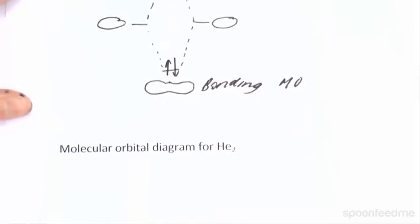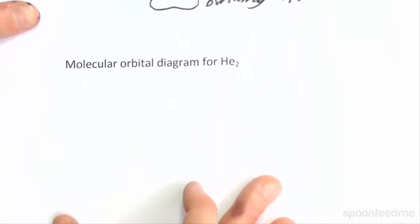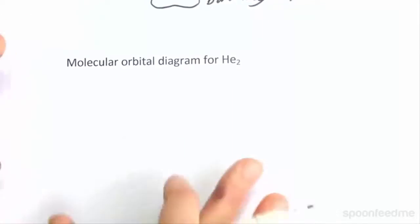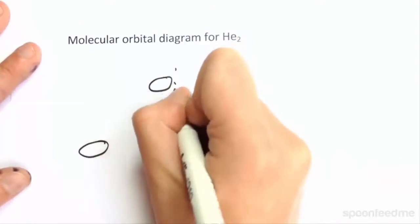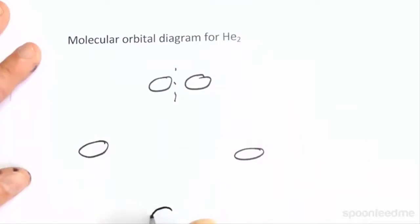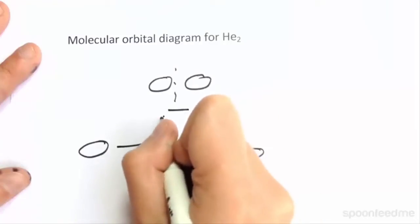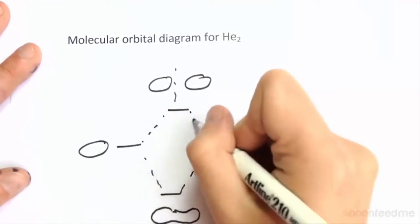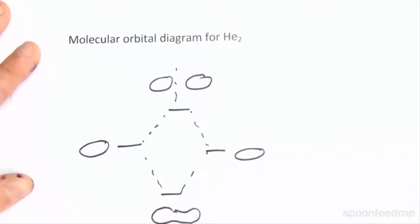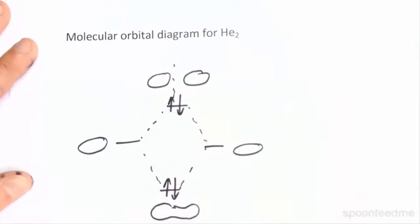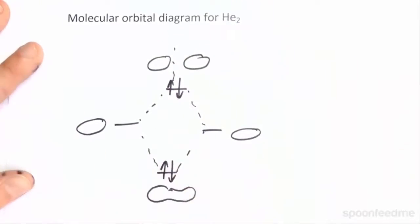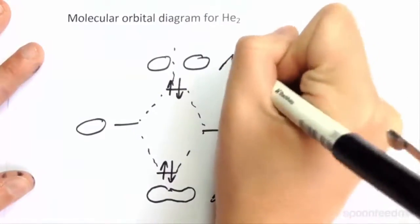What about helium-2? Just plain old helium-2. This has four electrons, so I'll draw this one out now. We have our two atoms, our antibonding and our bonding. The first two electrons will go into the bonding molecular orbital, and then the next two will go into the antibonding molecular orbital. So we've filled up all of the lowest energy orbitals. Remember, this is bonding and this is antibonding.